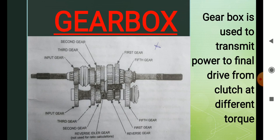How do we use the gearbox? We use the engine, the clutch, and the final drive. The gearbox is used to transmit power to the wheel.